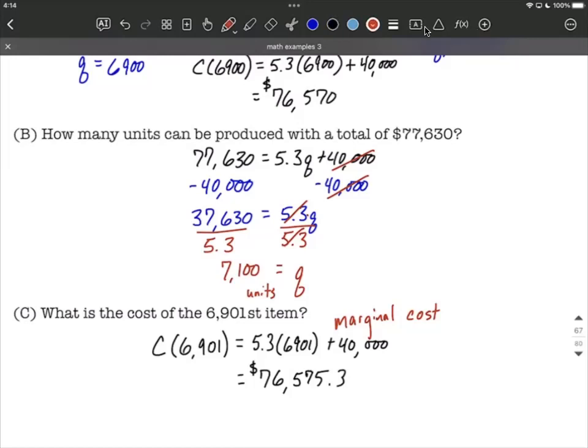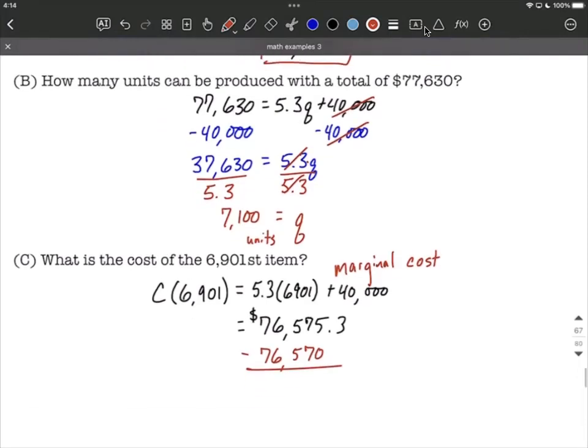If we subtract away the cost for producing 6,900 items, which we calculated in part A, minus 76,570, the difference is going to be 5.3. So that 6,901st item costs $5.30. But there's an easier way to actually do this instead of plugging in 6,901 and subtracting away 6,900 from the cost function.